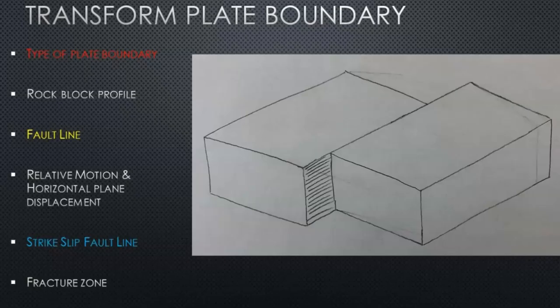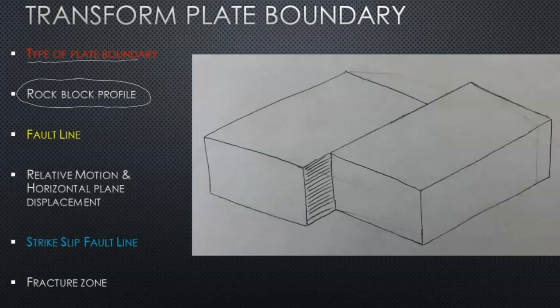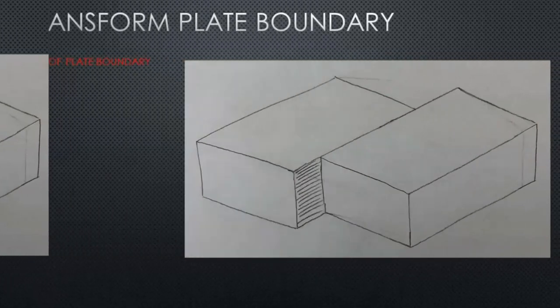As a quick overview of what's in the video, we're looking at what kind of plate boundary this is. We're going to look at the anatomy and rock profile of this transform plate boundary and discuss what a fault line is in relation to this boundary and discuss what happens, which is relative motion, and the type of fault line, which is a strike slip, and then finally look at what a fracture zone is compared to a transform fault.